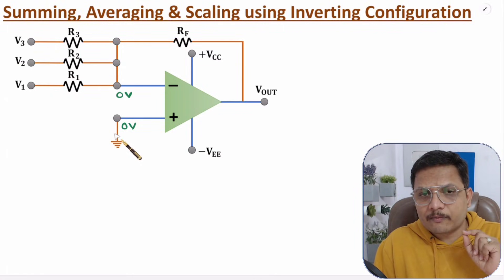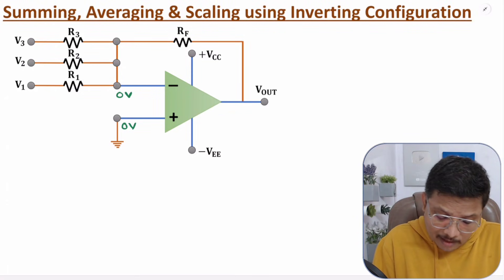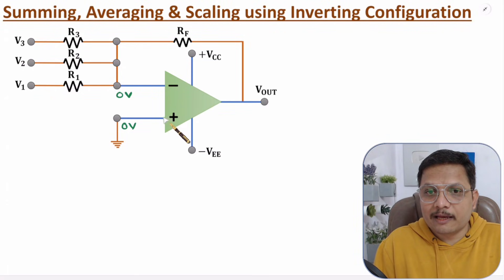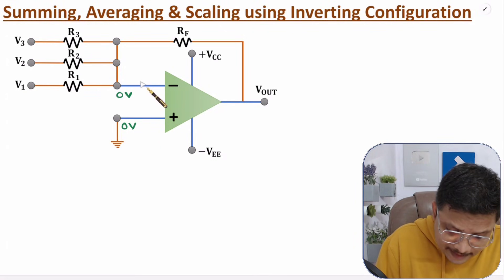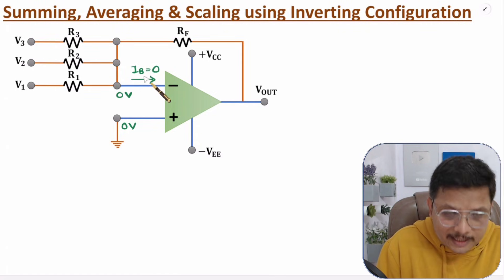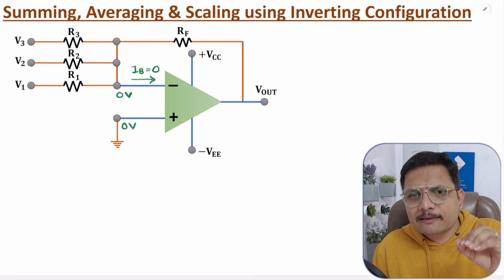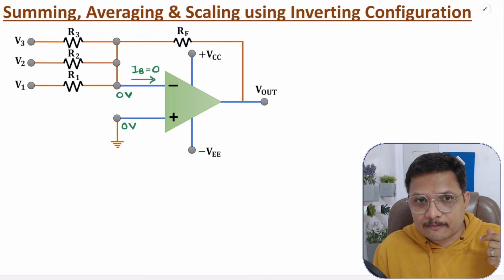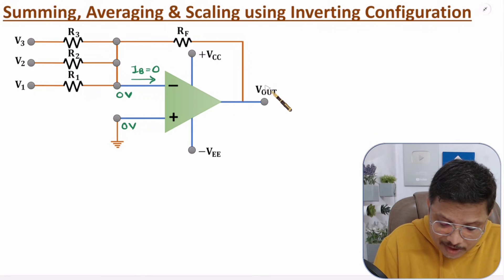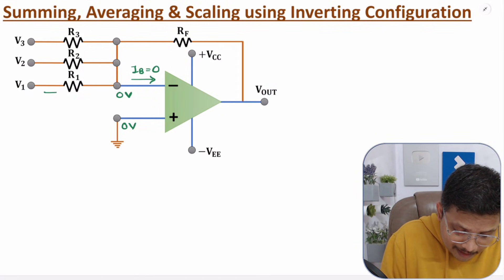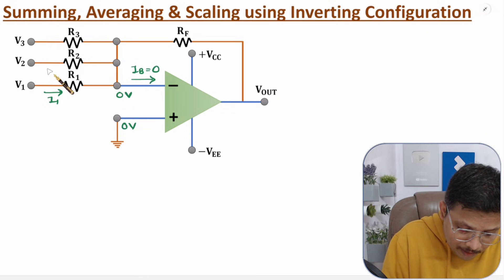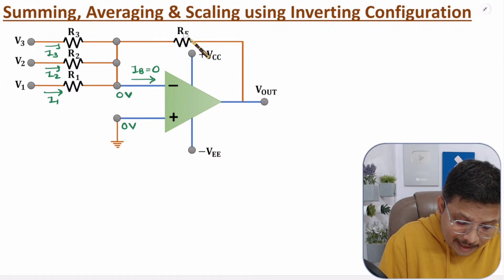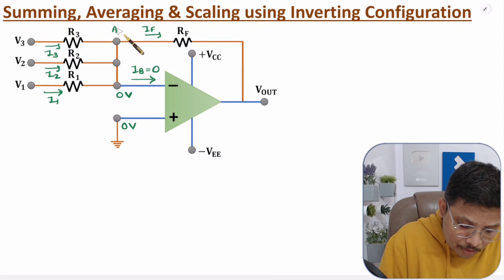Also, with an op-amp, input resistance is very high, so the current entering this terminal — call it IB — is almost zero (negligible compared to other currents). We label currents I1, I2, I3 for inputs V1, V2, V3, current IF through RF, and call the summing junction node A.